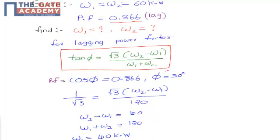From the given power factor cos φ = 0.866, we can calculate the value of angle φ, which is equal to 30 degrees. Substituting into tan φ: tan 30° = 1/√3. So 1/√3 = √3 × (W2 − W1) / (W1 + W2).